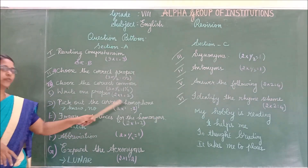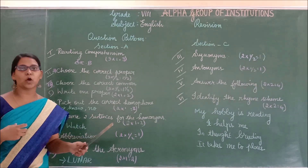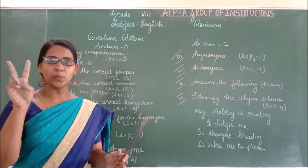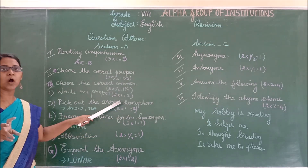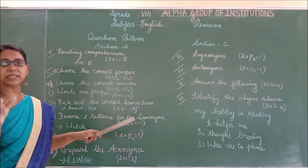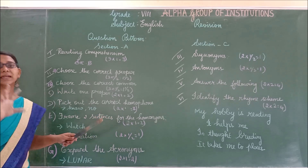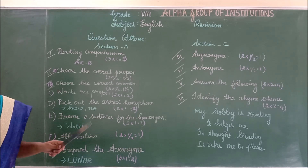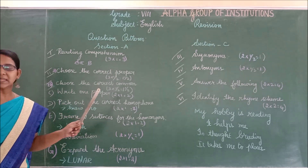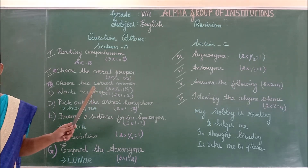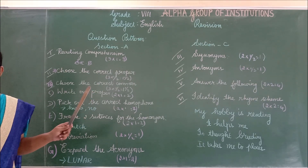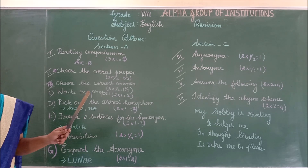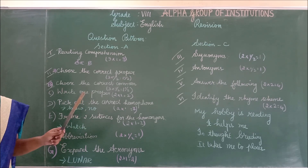And then, pick out the correct homophones. We have to pick out the correct homophones. They are given in a fill-up format. Inside the bracket, they will give you 2 words. Homophones are words which have different spelling and different meaning but a similar sound. Read the sentence, and inside the bracket, choose the one word that fits and write it in the blank. According to the given sentence, you have to choose the correct word.